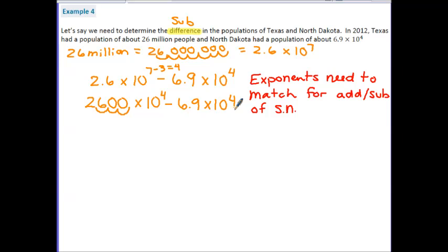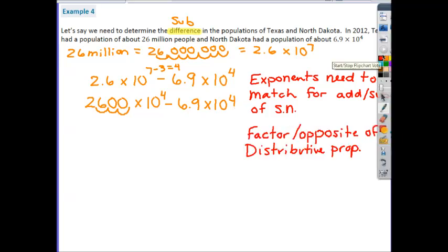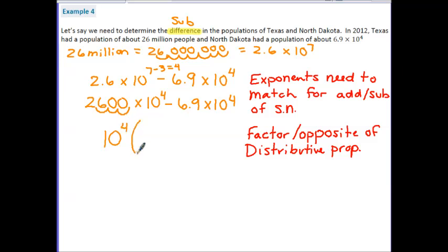So in order to do this, essentially what we're going to use is factoring, or the opposite of distributive property. And what I mean by that is that both of my terms here have a power that is 10 to the 4th. So here is one of my numbers, here is my other number, and they both contain the element 10 to the 4th. So if you think about distributive property, usually what we do is we would multiply a common number into the 2 or 3 different terms. So essentially you can think backwards here, this 10 to the 4th would have been multiplied in. So what we're going to do is we are going to factor it out of that. So 10 to the 4th would come out, and then what would be left is 2,600 minus 6.9. So if we subtract those, we're actually going to get 2,593.1. And again, this is multiplied by 10 to the 4th.